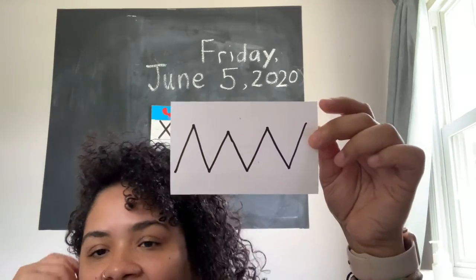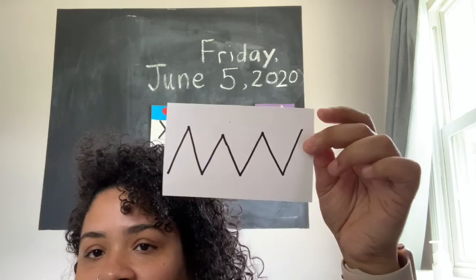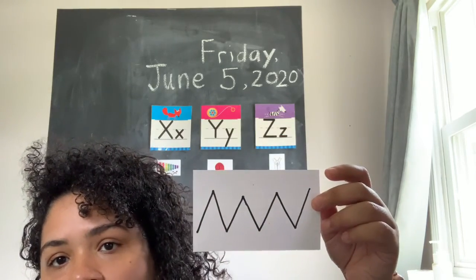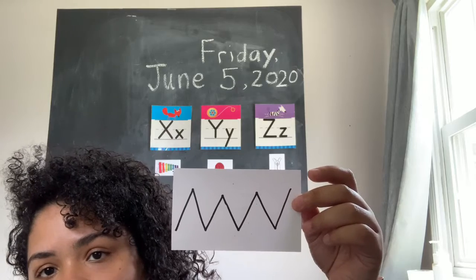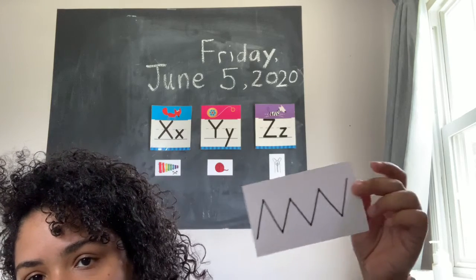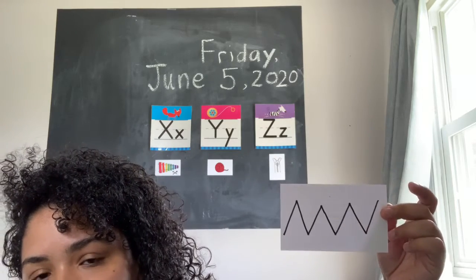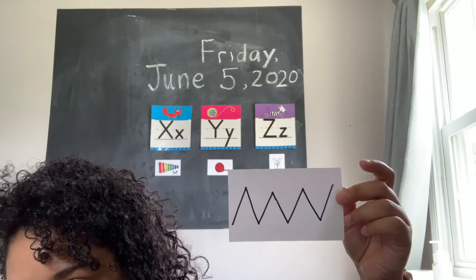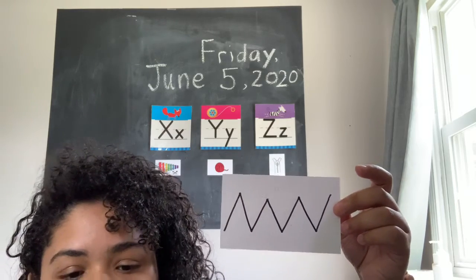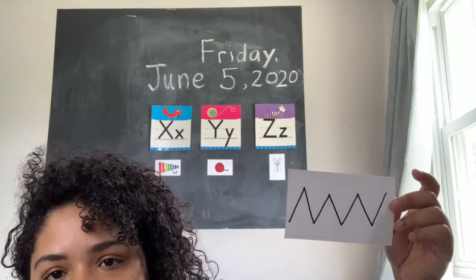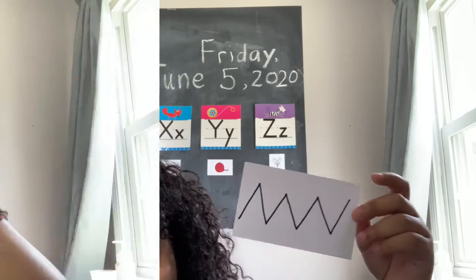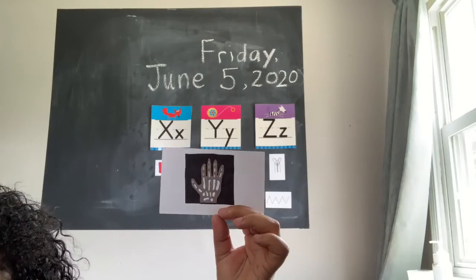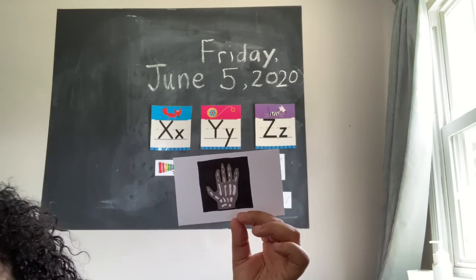Next one we have is zigzag. Does zigzag begin with the letter X, the way fox ends with X? Does it begin with the letter Y, like yo-yo and yarn? Or does it begin with the letter Z, like zebra and zipper? I think zigzag begins with the letter Z, like zebra and zipper. So I'm going to go ahead and put it under the letter Z.